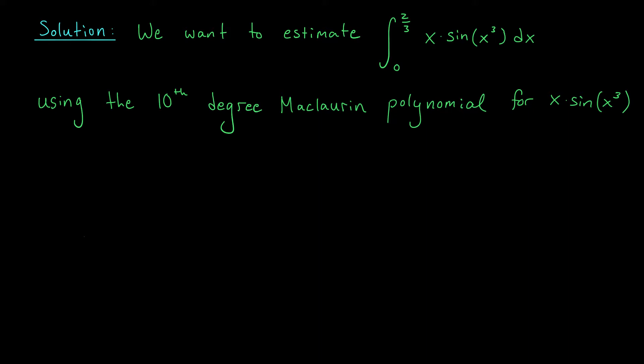The first step is to find this tenth degree Maclaurin polynomial. But how do you do it? Certainly not by definition — I'm not taking ten derivatives of this function. Instead, we'll use the method from the overview: start with the Maclaurin polynomial of a simpler related function. In this case, sine of u would be a good choice.